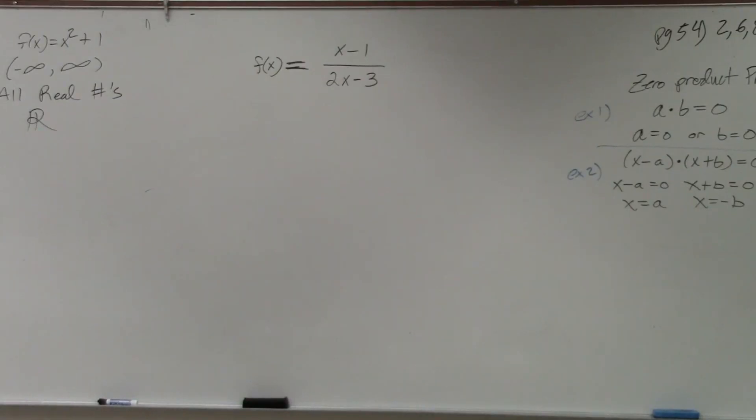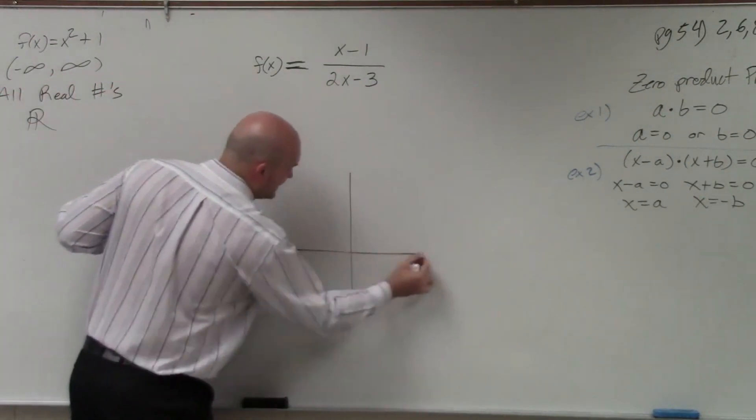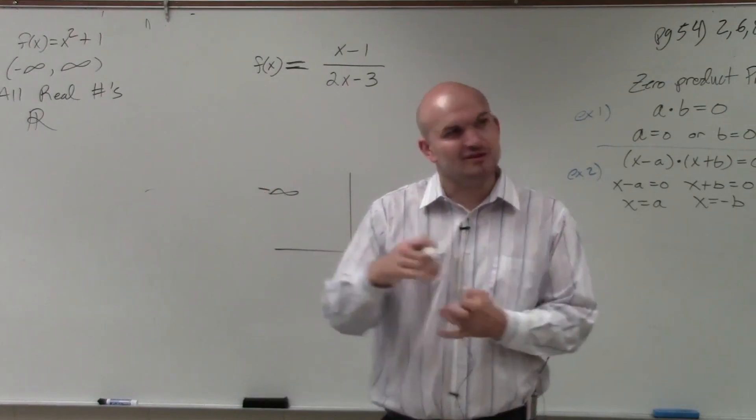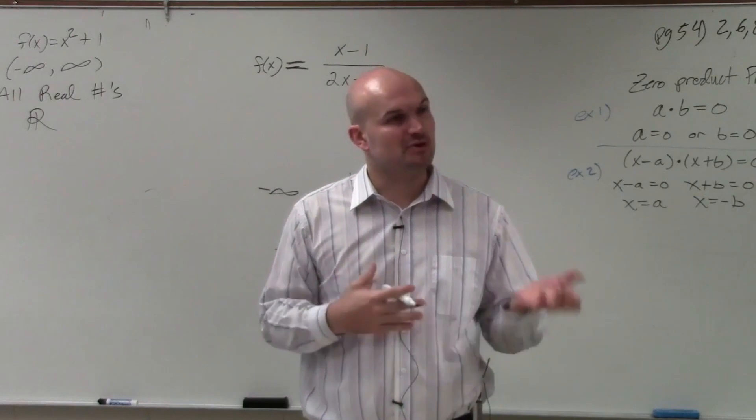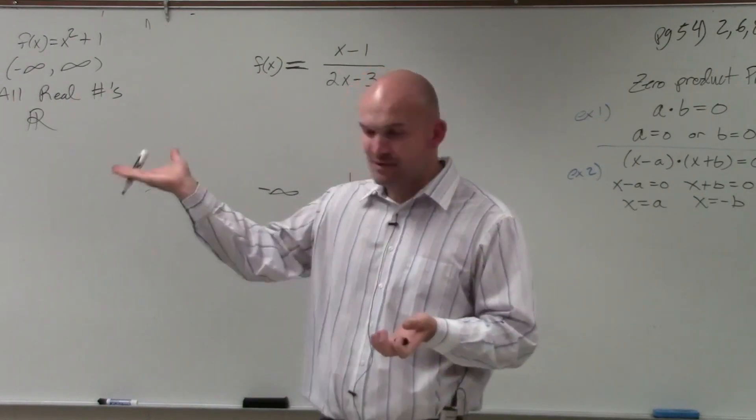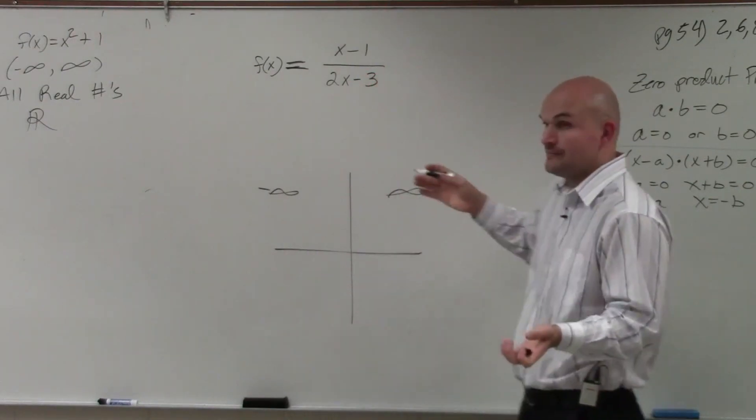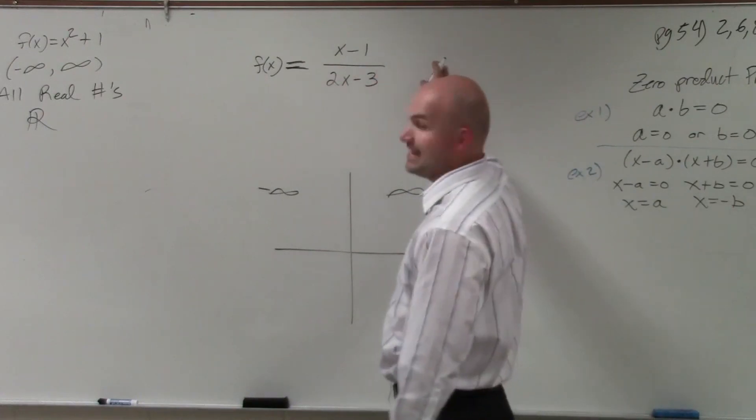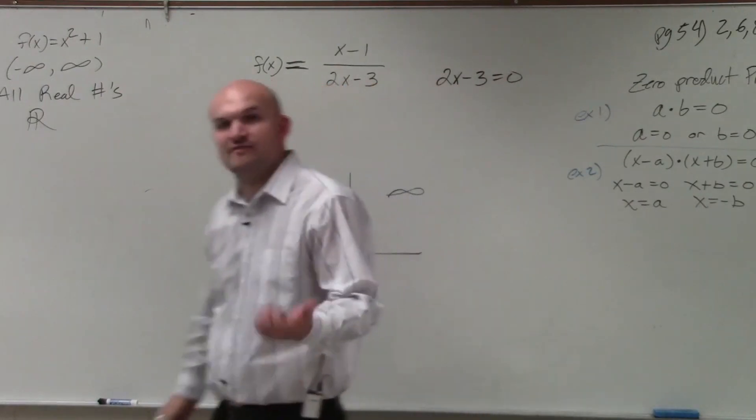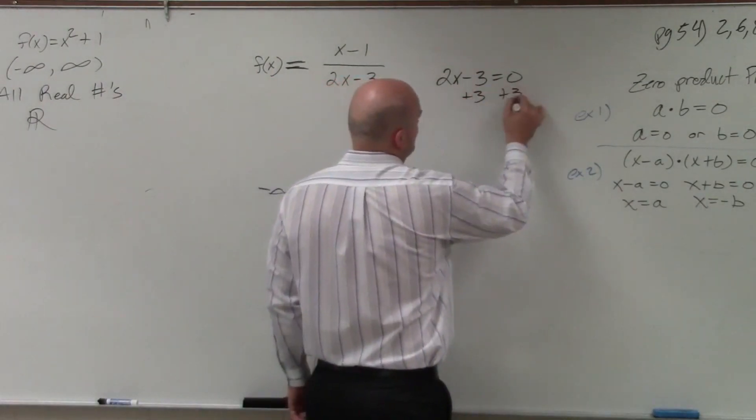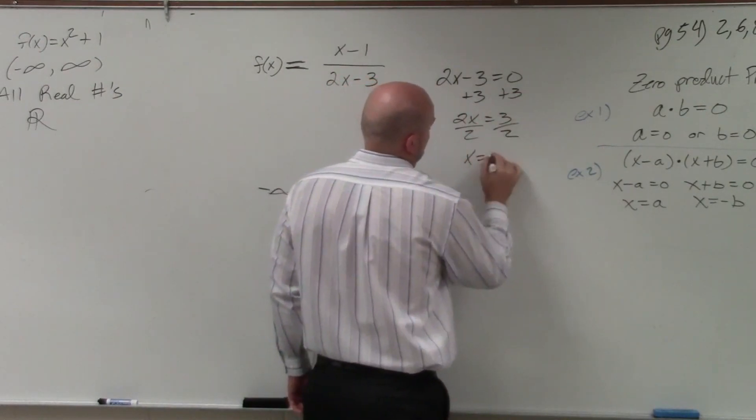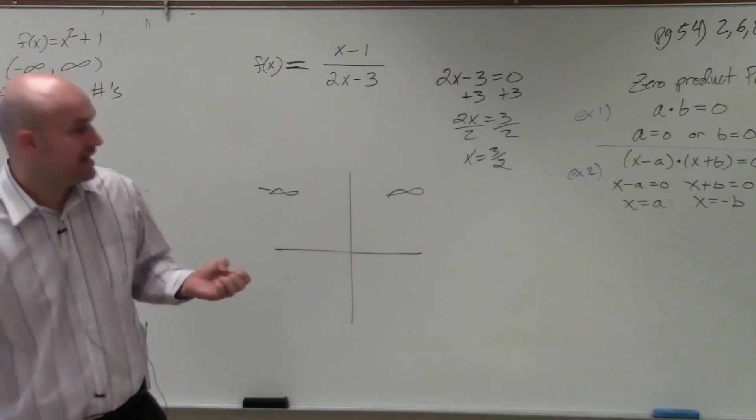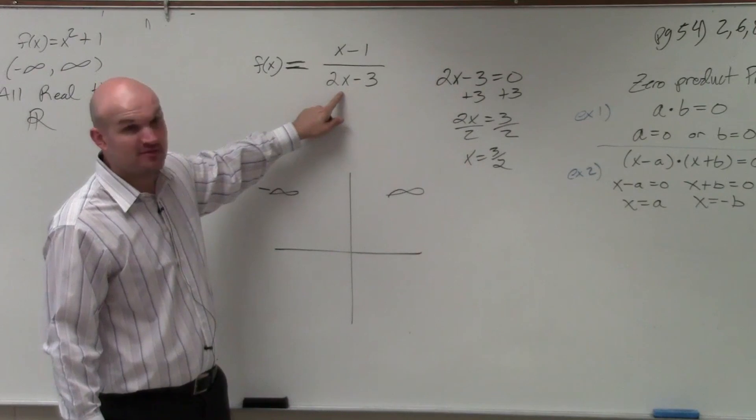If they don't tell us about any restrictions, we can assume that the domain is going to be from negative infinity all the way to infinity. There's no restrictions. However, we have to look at our embedded restrictions. We know that if there's a variable in the denominator, that can't make the denominator equal to zero. So I have a variable in here. I need to figure out what number makes my denominator equal to zero. The easiest way to do that is to take the denominator and set it equal to zero so I can find the value of x that does that. Using inverse operations from algebra, x equals three halves. That means when x is equal to three halves, that makes my denominator zero.